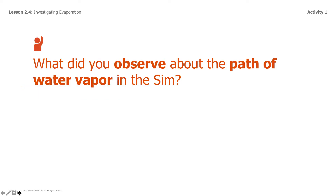If you're at this point in the science lesson, you should have done some observations about the path of the water vapor in the sim. I'm interested to know what you observed about the path of the water vapor. When you had a chance to click, what did you notice in those yellow lines? That's going to be very interesting because we're going to use that information as we move forward.